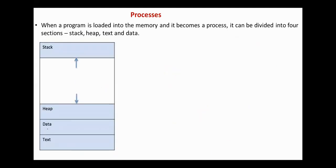When a program is loaded into the memory and it becomes a process, it can be divided into four sections: stack, heap, text, and data. The process stack contains the temporary data such as method or function parameters, return address which is the content of the program counter, and local variables.